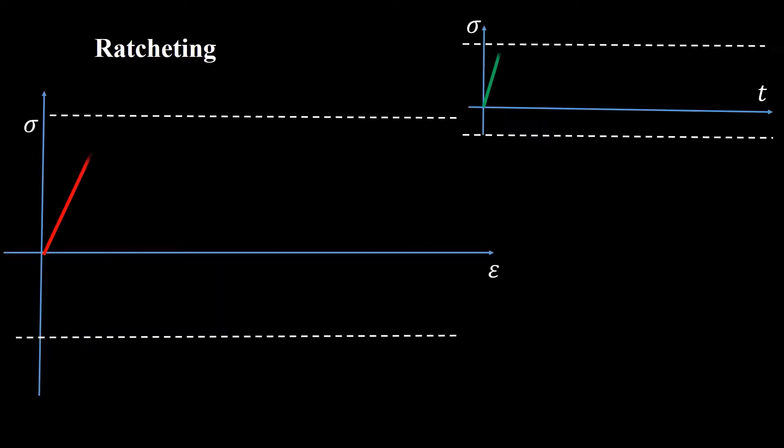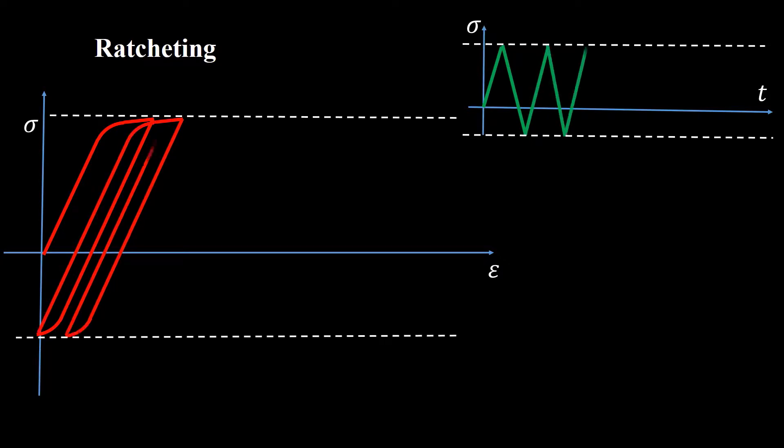In the worst case, the loading is so high that no elastic or plastic shakedown is observed. As shown in the right, the applied load is asymmetrical stress-controlled cyclic loading.